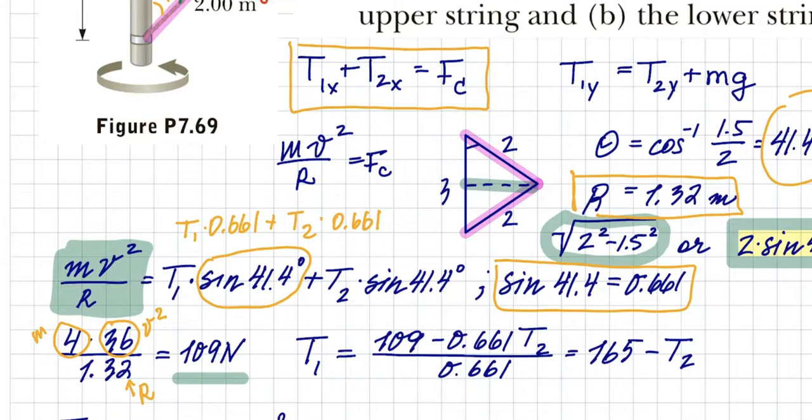Minus this would be equal to this. So then if I subtract 109 minus 0.661 of T2 and divide by 0.661, I'm going to end up with T1. So this is my substitution for T1: T1 is 165 minus T2.